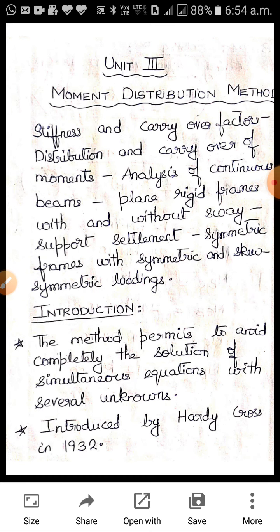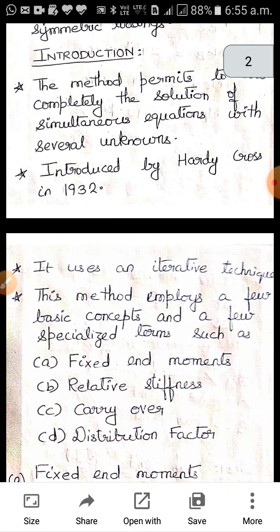Now coming to the introduction. In the slope deflection method, we use equilibrium equations and solve simultaneous equations to get the unknowns — primarily theta, the rotation. In the moment distribution method, there is no solution of simultaneous equations. This method permits us to completely avoid solving simultaneous equations with several unknowns. It was introduced by Hardy Cross in the year 1932. This is an iterative technique — you keep repeating iterations until you get a satisfactory answer.